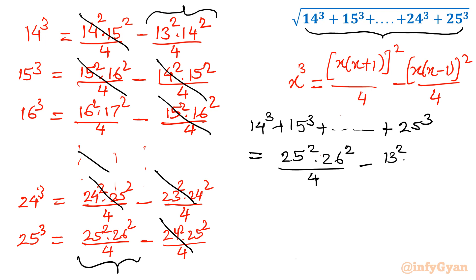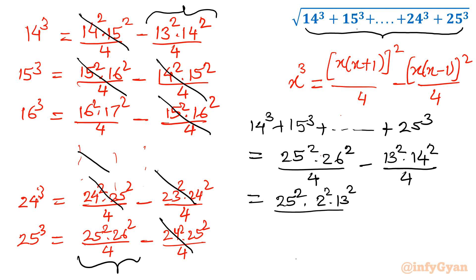Now, 26 can be written as 2 times 13. So I can write 25² times (2 times 13)² over 4, which is 25² times 4 times 13² over 4. Similarly, 14 can be written as 2 times 7, so that term becomes 13² times 4 times 7² over 4.